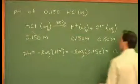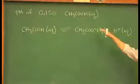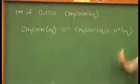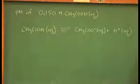On the board behind here, I've set up the identical problem: calculate the pH of 0.150 molar acetic acid, and acetic acid is a weak acid.